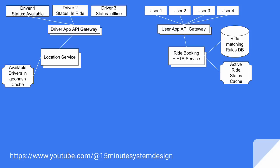Now let's say there are a few users who are also connected to the user app API gateway. We can omit the user service here, assuming user side clients are also able to pull user profile information from the user service and cache this data at their device level. Now the user starts sending their current location and user ID to the ride booking and ETA service every three seconds, whenever a user comes online on the app, and this keeps happening until the app gets closed. This is done primarily to show all nearby available cabs. The ride booking service maintains all active ride statuses in cache and can also use some sort of ride matching rules from the database.